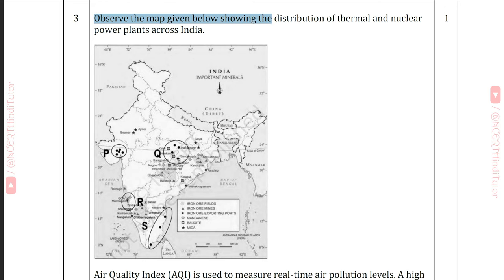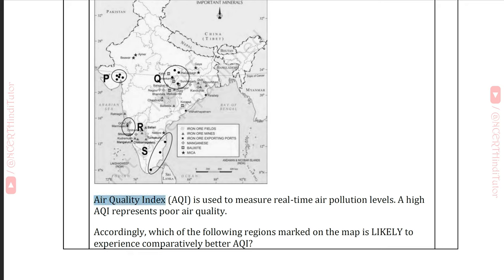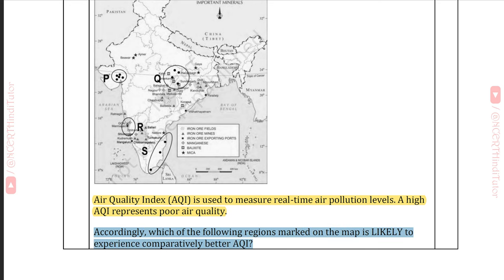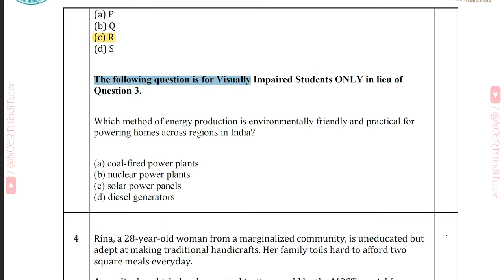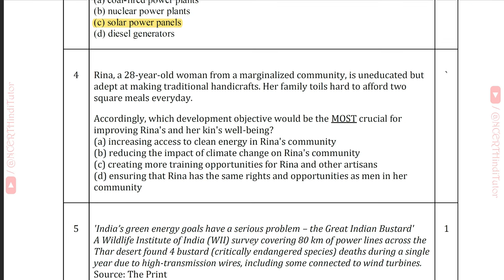Question 3: Observe the map showing the distribution of thermal and nuclear power plants across India. Air Quality Index (AQI) is used to measure real-time air pollution levels; a high AQI represents poor air quality. Which region marked on the map is likely to experience comparatively better AQI? Answer C: R. For visually impaired students: which method of energy production is environmentally friendly and practical for powering homes across regions in India? Answer C: Solar power panels.